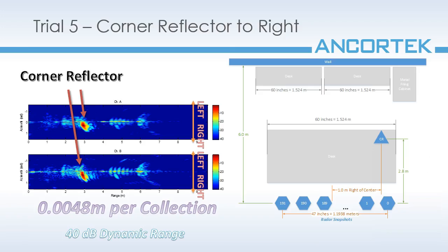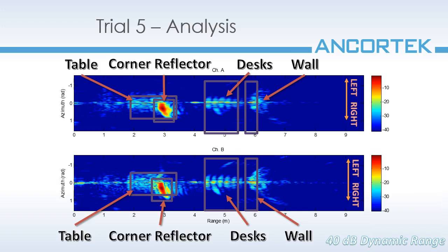Now I've moved the corner reflector to the other side of the table at the same range and cross range distances. As expected, our corner reflector is showing up on the proper side of the radar's midline at the correct range. If I zoom in, I can make out just as before the same objects I saw in the previous image.